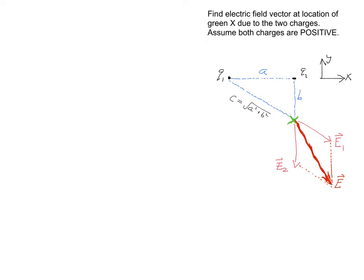To solve for the electric field analytically, we need to choose a coordinate system. I'm taking the x direction to point along the direction from charge 1 to charge 2, and the y direction to point perpendicular to that, toward the top of the page. It will also be useful to define an angle theta. With this coordinate system, let's break each of these electric field contributions, E1 and E2, into x and y components corresponding to these axes.